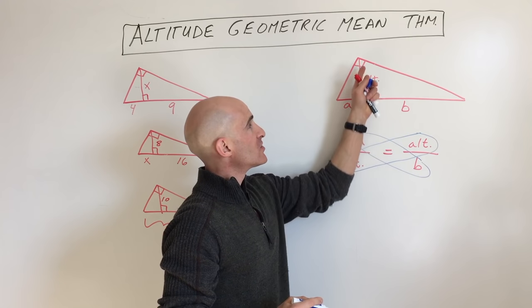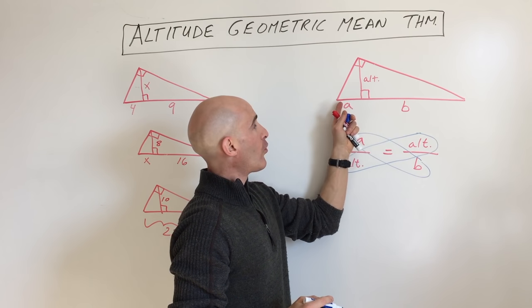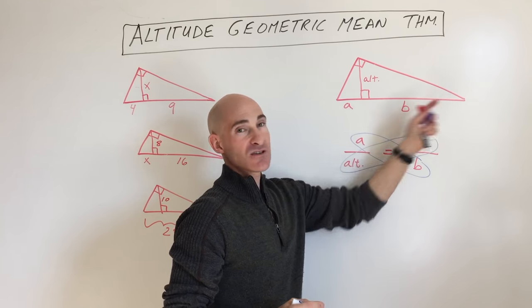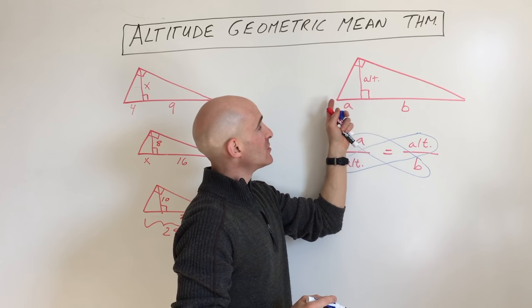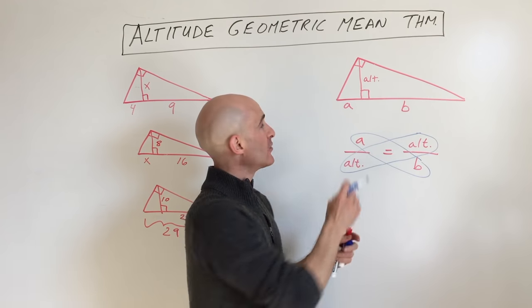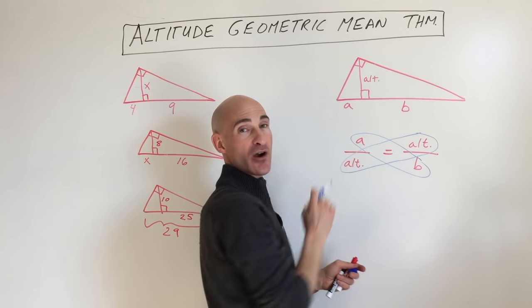What we're going to do here is solve for the altitude or one of these pieces of the hypotenuse. When you drop an altitude to the hypotenuse of a right triangle, it splits this hypotenuse into two parts, A and B.